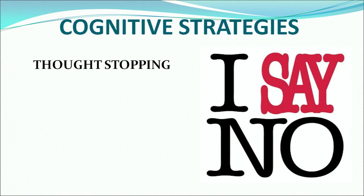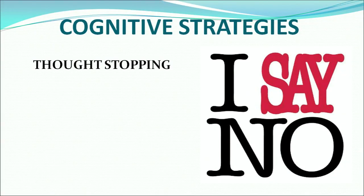The second cognitive strategy is thought stopping. What is thought stopping? It is simply saying no. Whenever thoughts that create stress come to your mind, you close your eyes and imagine the word 'no' - meaning you say no to these thoughts. Just stop it. Tell yourself: I am not going to think about thoughts that are creating stress.